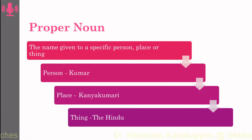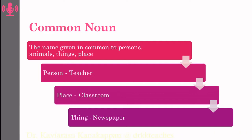In a normal sentence, only the first letter of the sentence is capitalized. And there is another exception — the letter I. Next is the common noun. Common noun is a name given in common to persons, animals, things, or places.